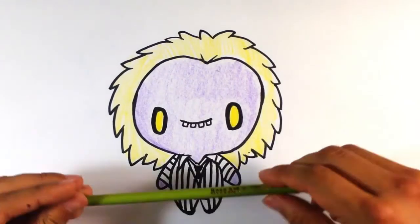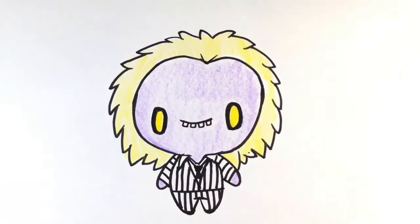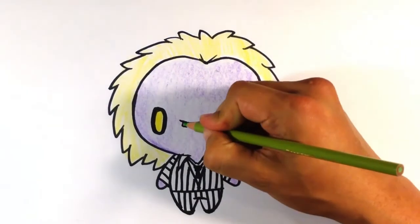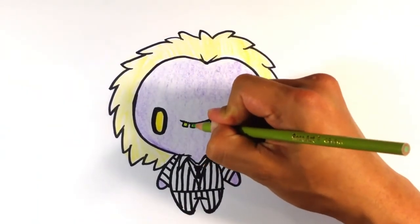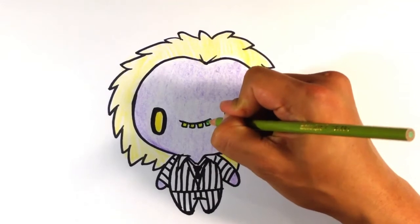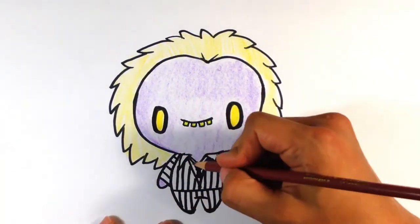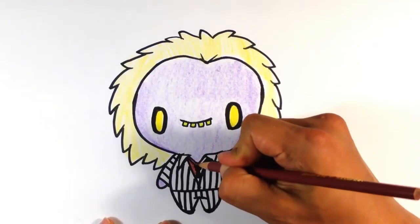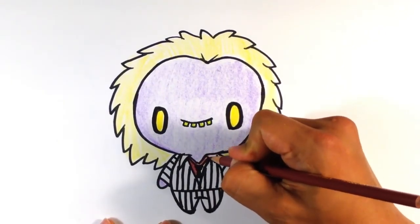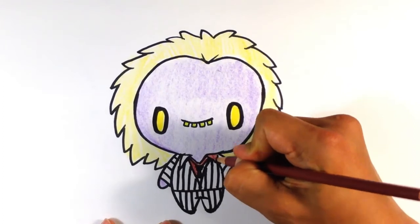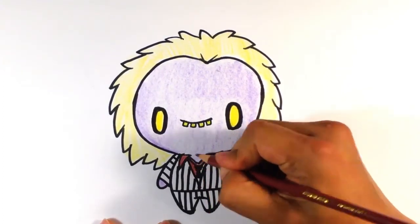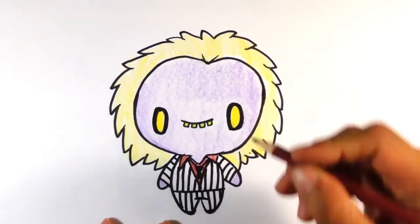And then I'm going to grab this color I used last time called celery for the teeth. Let me sharpen it real fast. And I'm going to grab a darker color, and this color is called raspberry, and that's going to be for the shirt that he has, that shirt that he buttons up underneath the suit itself.